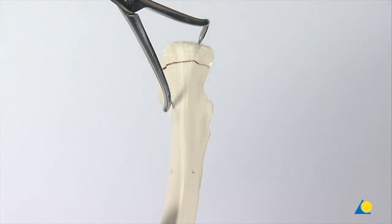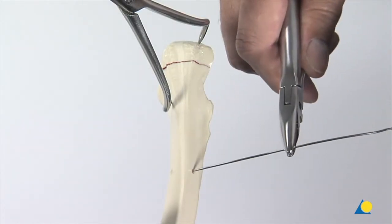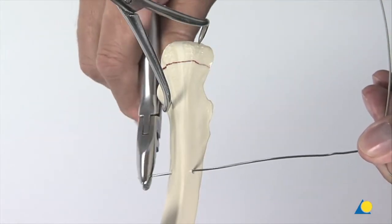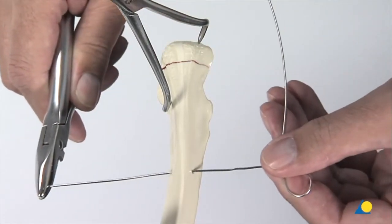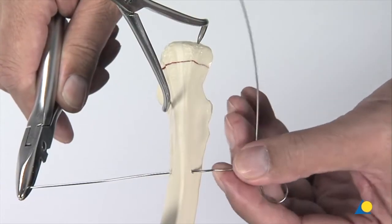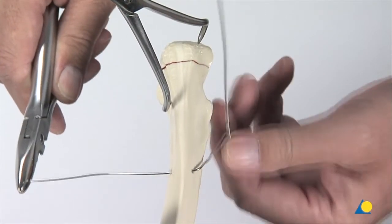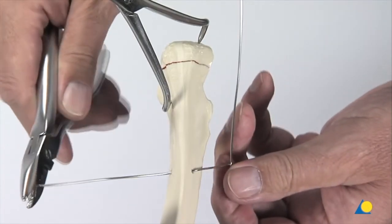The shorter end of the circlage wire is introduced from medial to lateral through the hole using the wire bending pliers. On the ulnar side, the wire is bent near the hole so that the prepared loop lies approximately 2cm proximal to the hole.